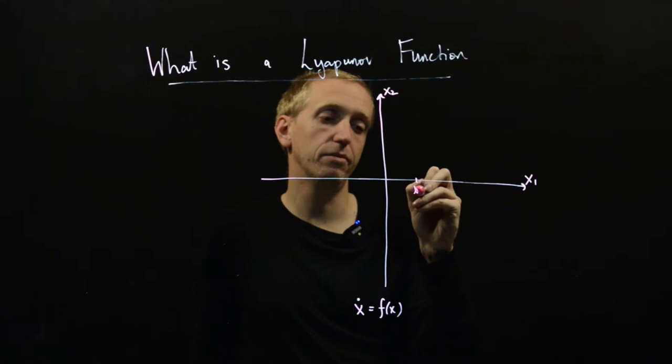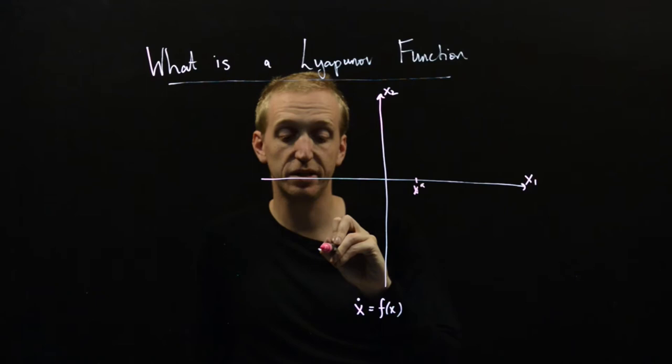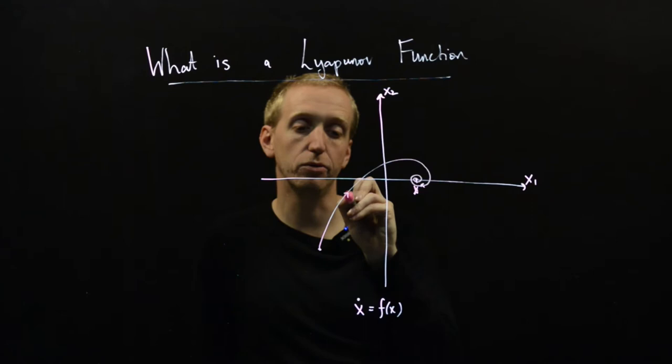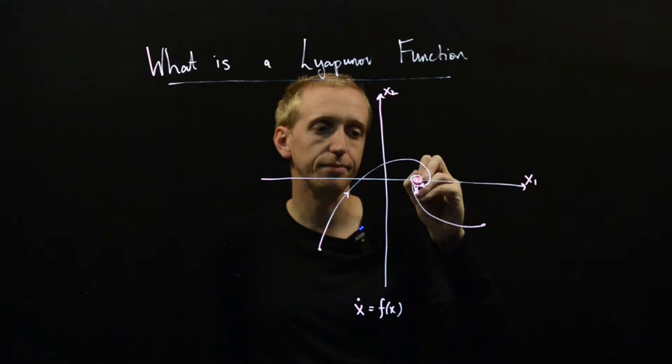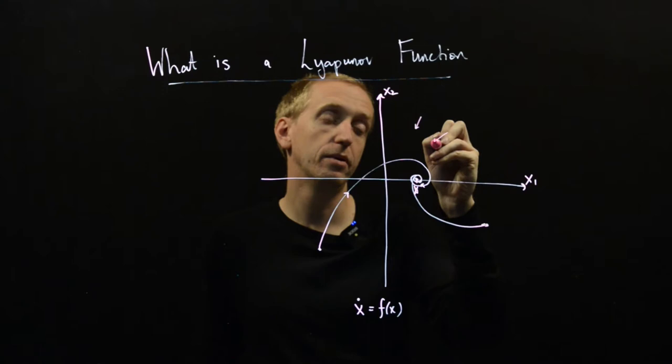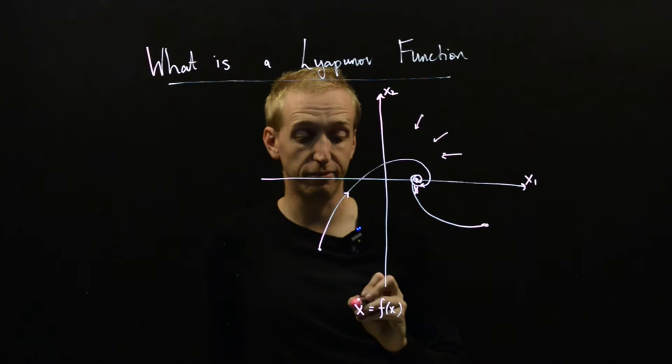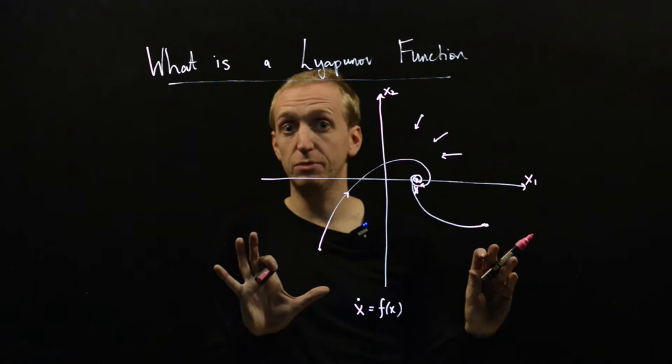So let's say this is an equilibrium point here, this is x star, and we have a bunch of trajectories for our system. So initialized here, maybe the system does something like this, and it spirals into our equilibrium point and the same thing happens over here. And we also have a bunch of arrows, and these tell us the value, or the direction at least, of x dot at these various different points in our state space. So we have our phase portrait.